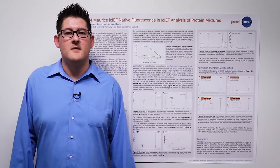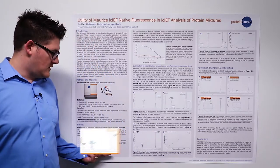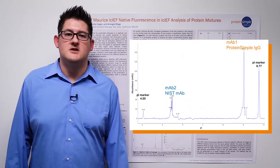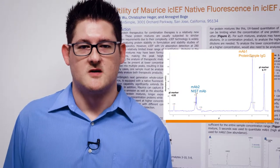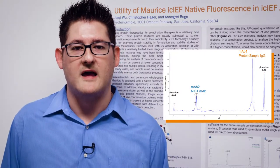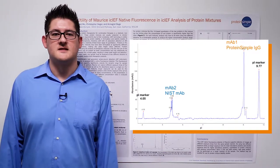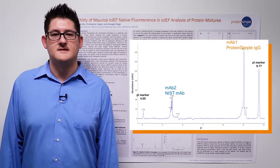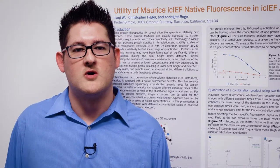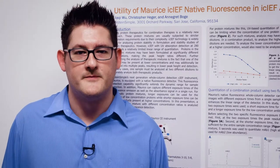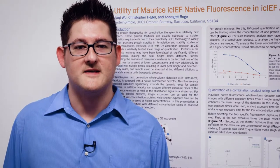We generated a model system to mimic a therapeutic co-mixture by using the NISTmAb and our ProteinSimple IgG. These antibodies have significantly different isoelectric points, enabling their separation by IEF. For the study, we placed the two proteins at 10 to 20 fold concentration differences. In this situation, on a UV-based instrument, the same sample would require dilution, which will decrease sample throughput and increase the complexity of data analysis.